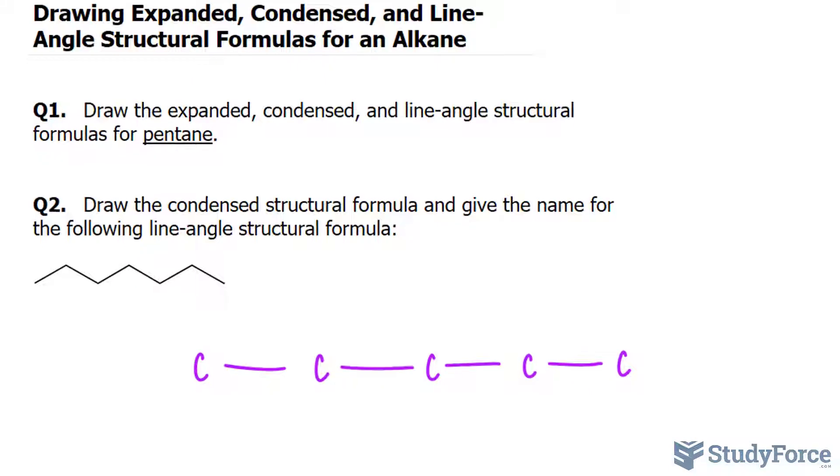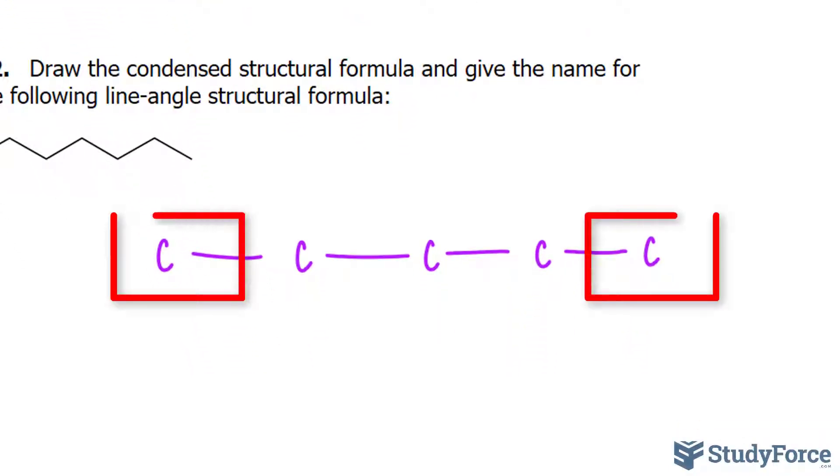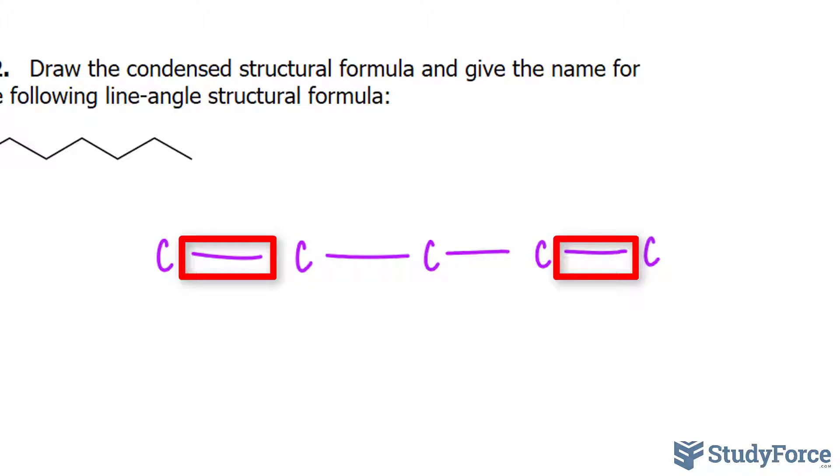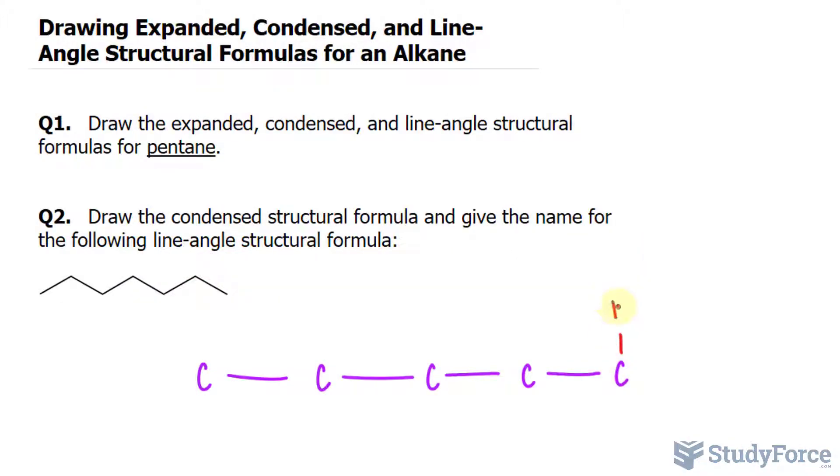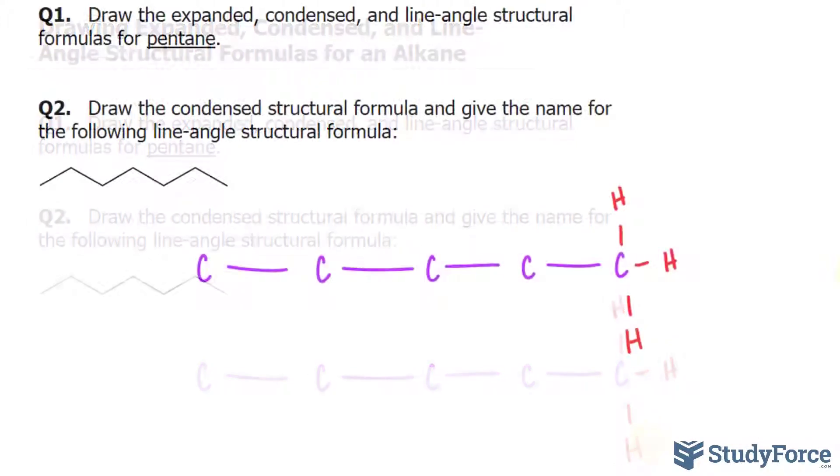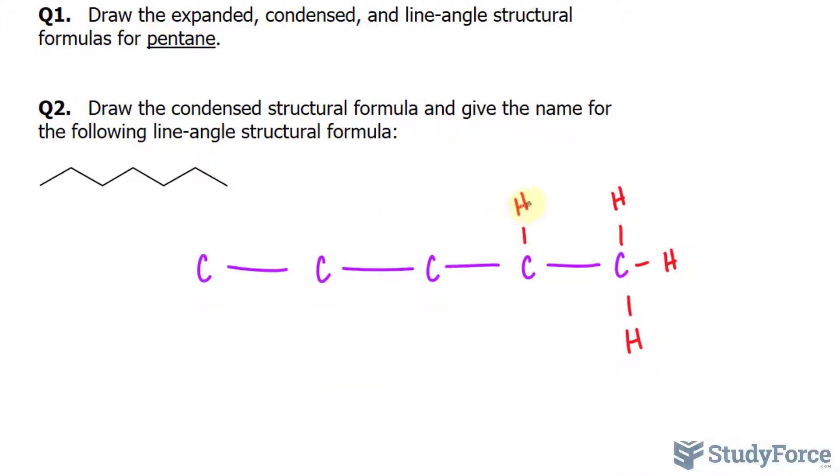And now we have to fill the structure with hydrogens. The end carbons can bond to three hydrogens because it has three available electrons. Remember that a carbon atom has a valence of four, and notice that one electron is already occupied with the other carbon. With that being said, this carbon should have three hydrogen atoms covalently bonded to it, and the ones on the inside should have two because they only have two available spots to bond. So this is the expanded version, and this one has three as well.